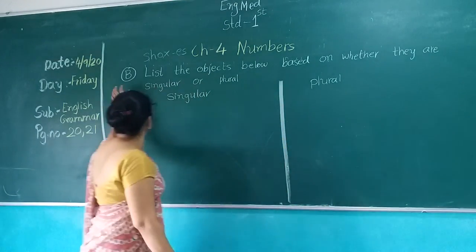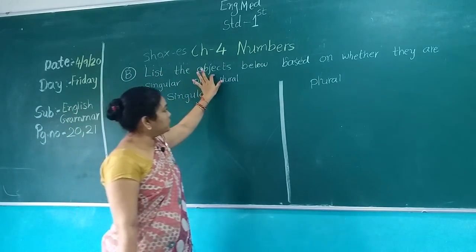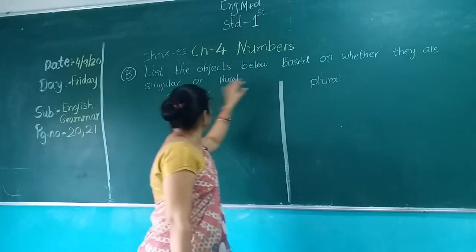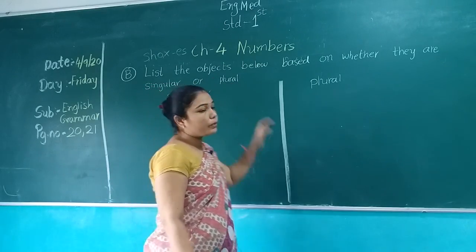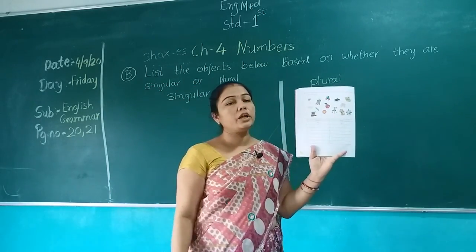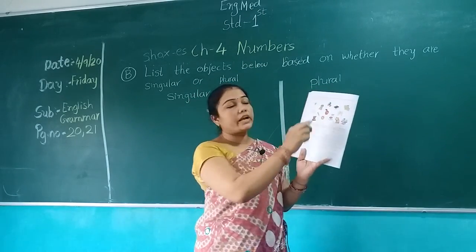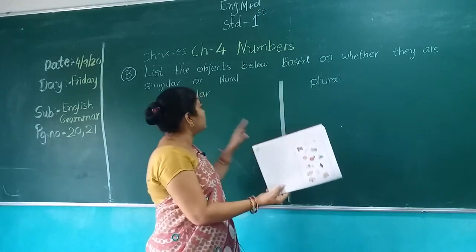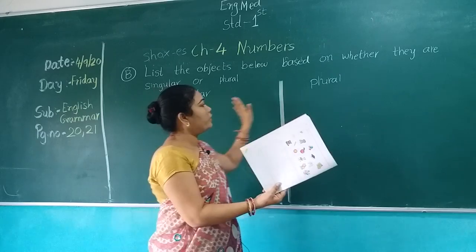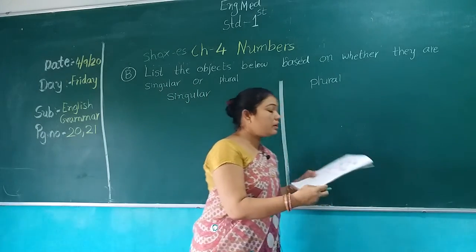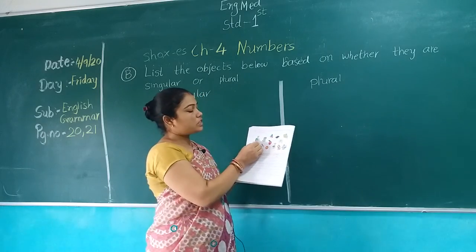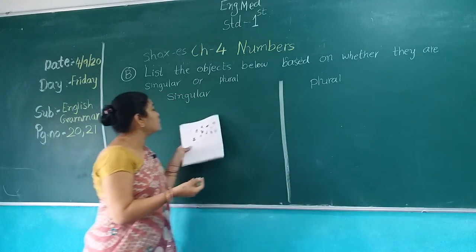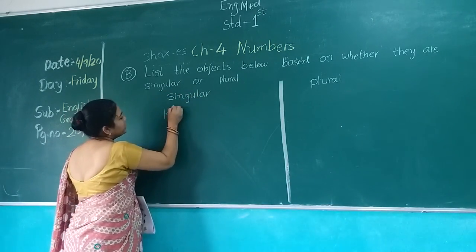Exercise number B: List the objects below based on whether they are singular or plural. In your book, see page number 22. There are given some objects. We have to find out which is singular and which is plural and write them in the correct box. First is kite. Only one kite is there, so it is called singular. Write in the singular column: K-I-T-E, Kite.